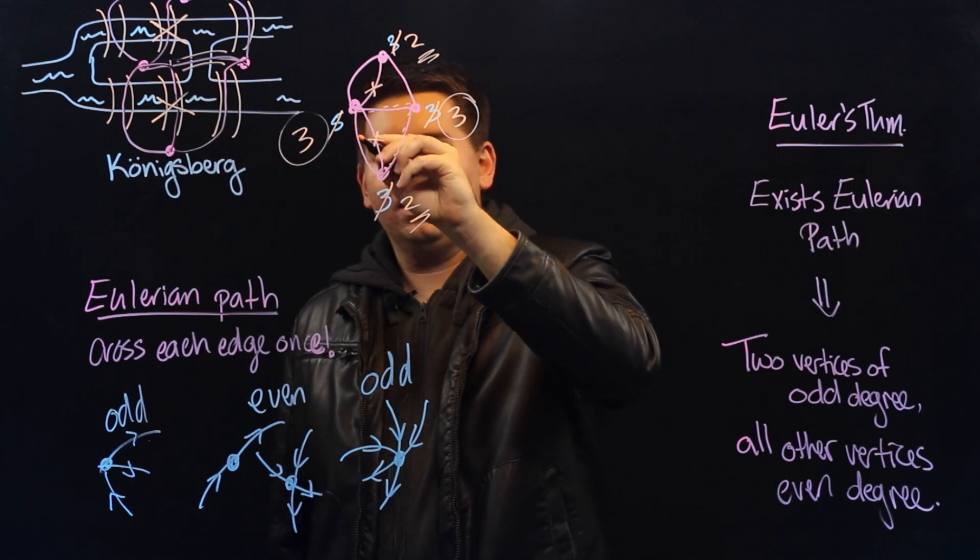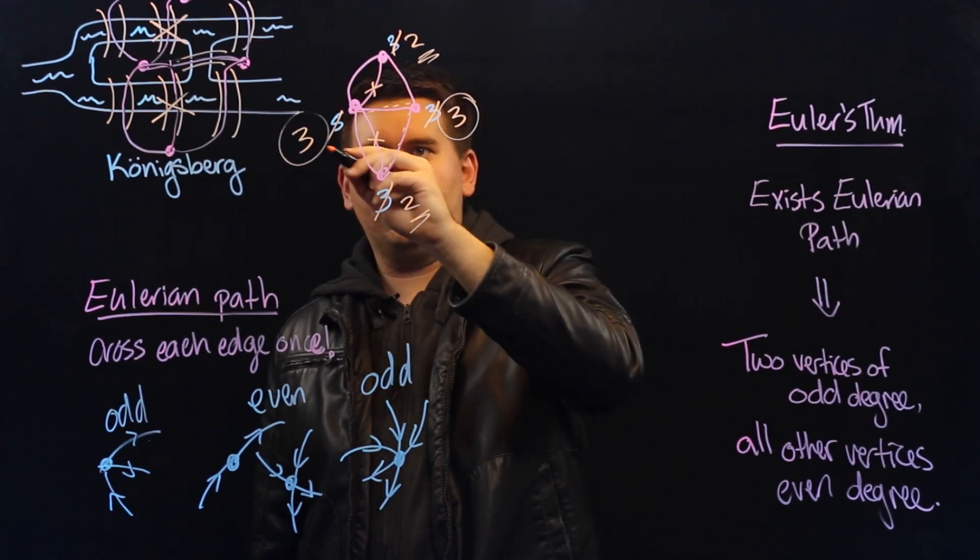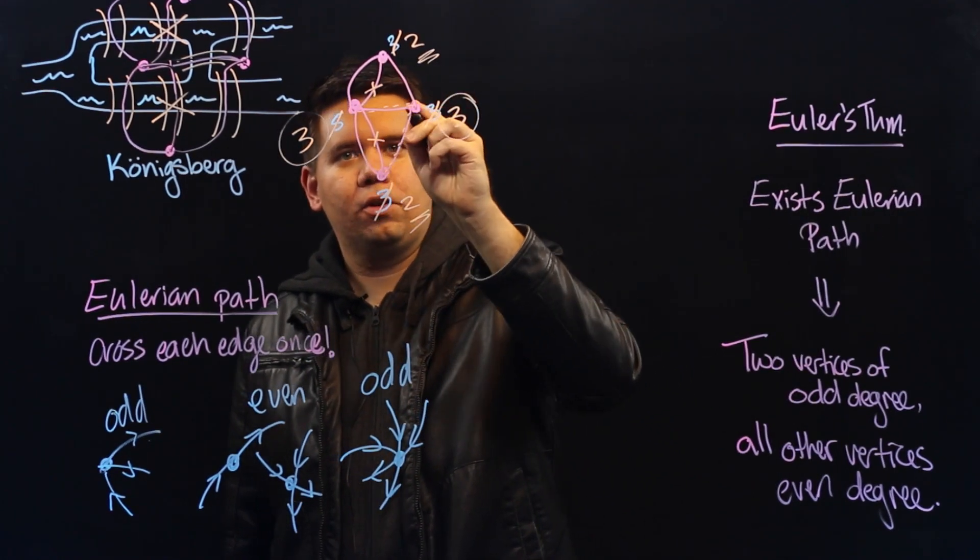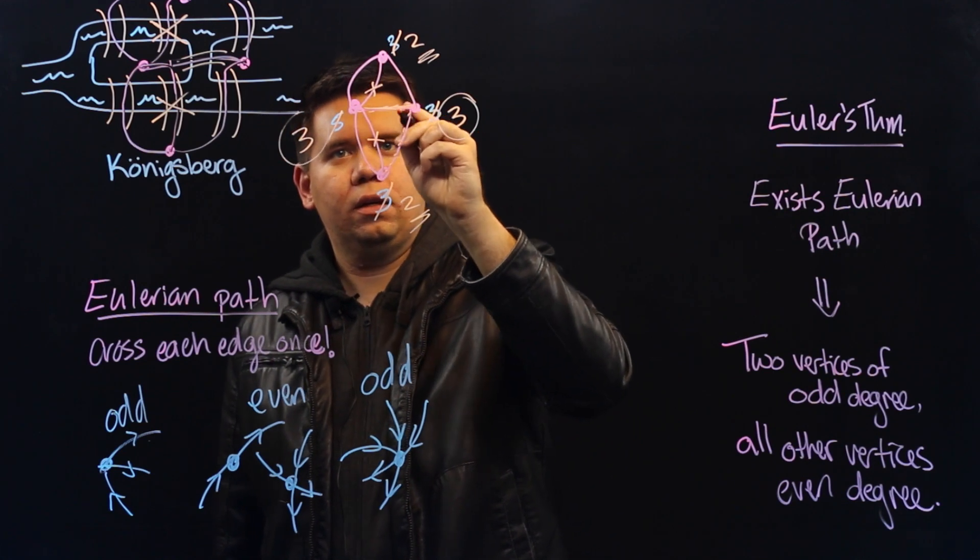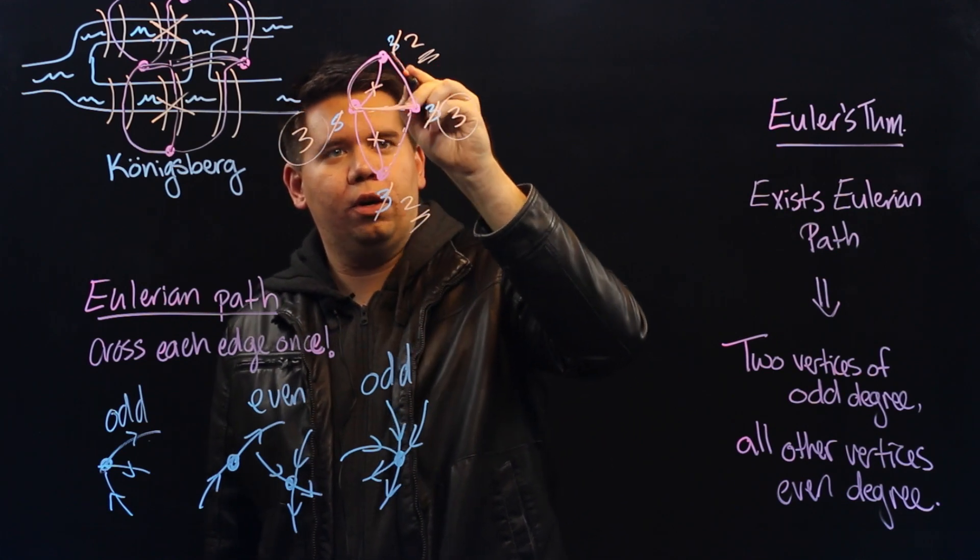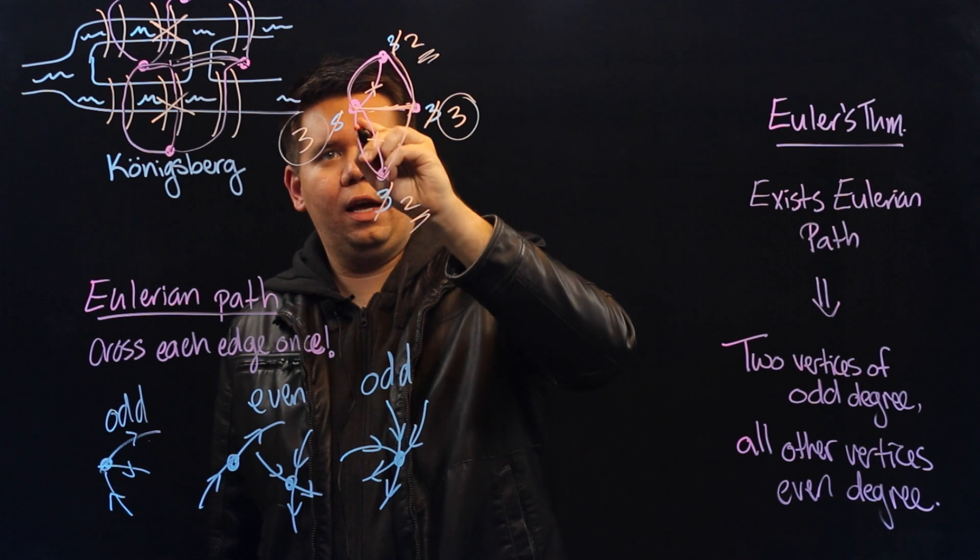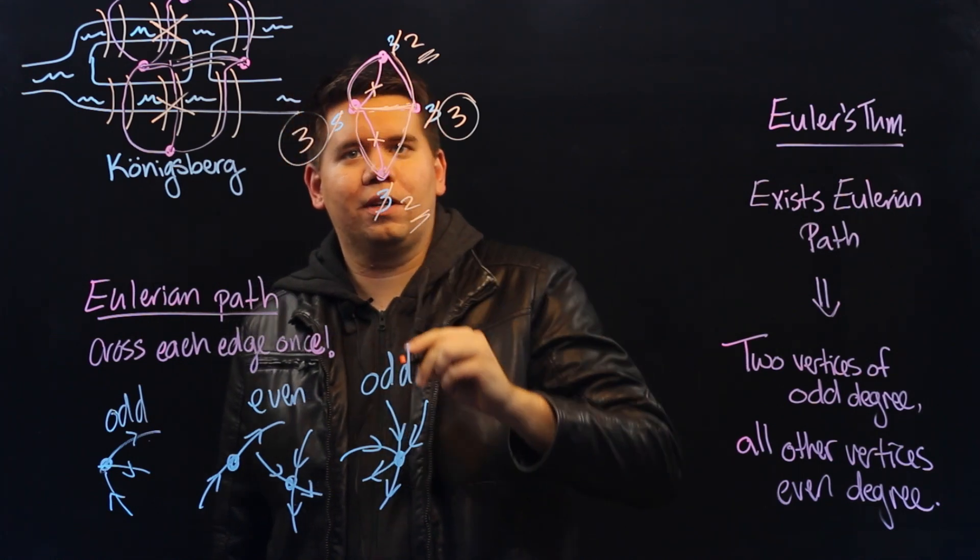That won't do it. So let's begin one that wants an odd degree. You can walk, we go up, we go down, down, and up, creating an Eulerian path.